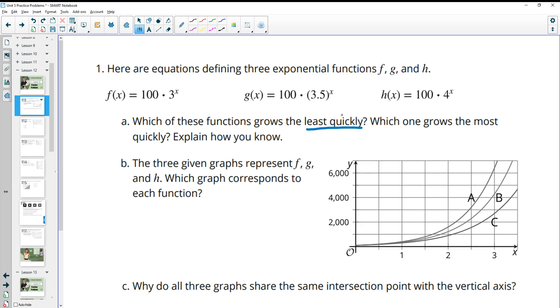When we're looking at which one is growing least quickly, we want the smallest growth factor. Remember that the growth factor is the number attached to the variable. When we look at these, our lowest growth factor is f(x) because the b value is the smallest. Three is the smallest.